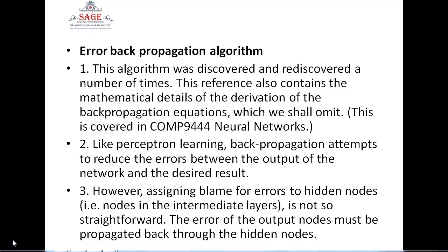Sometimes there is a concept that the hidden layer may be responsible for this kind of error. The error of the output node must be propagated back through the hidden layer. We have to calculate minimas at which we can conclude that the loop must end at some point, and this gradient is used to reduce the error as the looping in the back propagation algorithm must end somewhere by calculating the minima value.